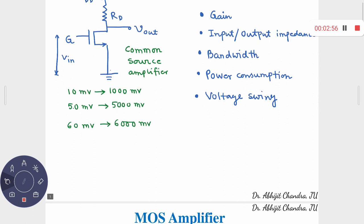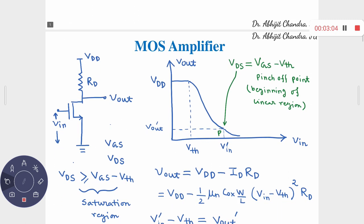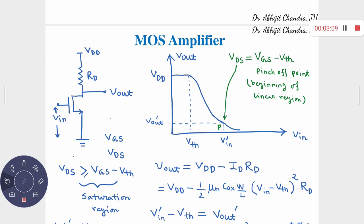Last class we discussed the small signal model of this MOS amplifier. Today we will once again calculate the expression for the voltage gain from the large signal analysis. We derived the small signal model of the NMOS and found that initially there are two components: the gate-to-source isolation and a voltage-dependent current source GM·VGS between drain and source. Including channel length modulation adds an output resistance R0 between drain and source. From this model we got the voltage gain expression: minus GM times Rd.